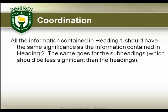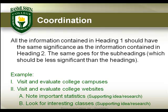The outline should also demonstrate a coordination of ideas. All the information in heading 1 should have the same significance as the information in heading 2. The same goes for subheadings, which should be less significant than the headings. In this example, campus and website visits are equally significant — they are part of the main tasks you would need to do. Finding statistics and classes found on college websites are parts of the process involved in carrying out the main heading topics.